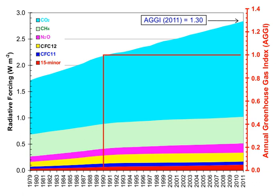Earth absorbs some of the radiant energy received from the sun, reflects some of it as light, and reflects or radiates the rest back to space as heat. Earth's surface temperature depends on this balance between incoming and outgoing energy. Greenhouse gases absorb and emit some of the outgoing energy radiated from Earth's surface, causing that heat to be retained in the lower atmosphere.